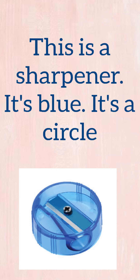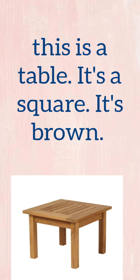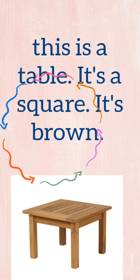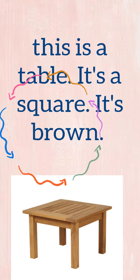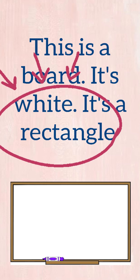Now it's time to learn how to describe something according to its shape and its color. Let's see. This is a sharpener — it's blue and it's a circle. This is a table — it's a square and it's brown. This is a board — it's white and it's a rectangle.